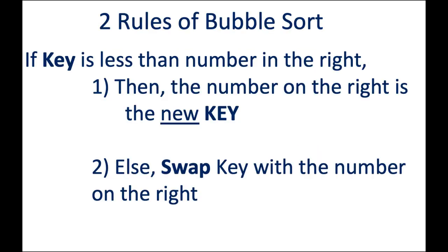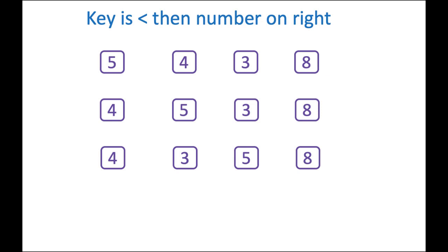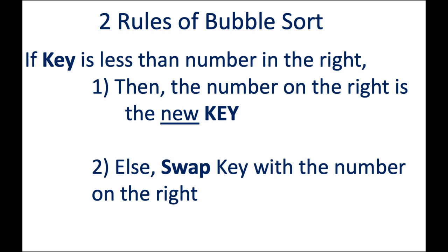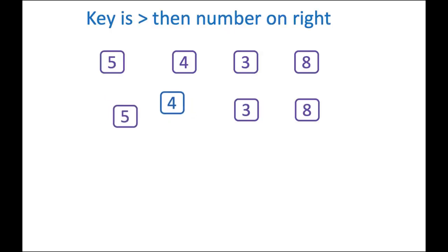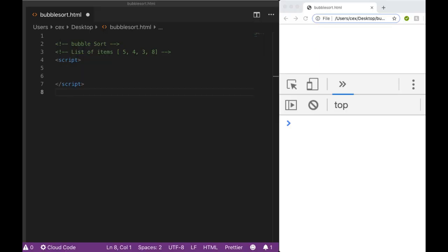So the new key was literally eight — that is rule number one, applied on the third iteration. Rule number two: if the key is greater than the number to the right, we do a swap. We applied that on the second and third iterations — swapping five with four, and five with three. That's the overview of bubble sort. Now let's see how we can implement bubble sort using JavaScript.